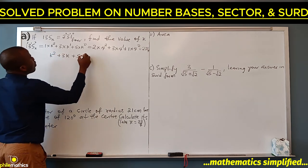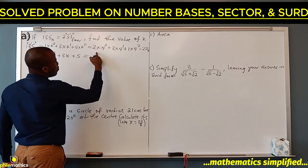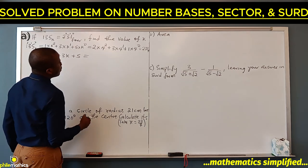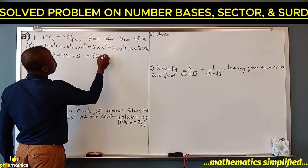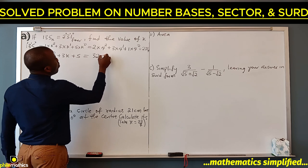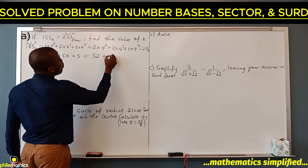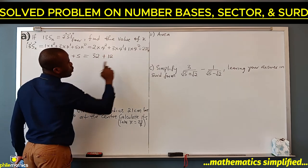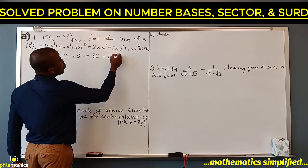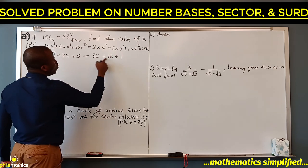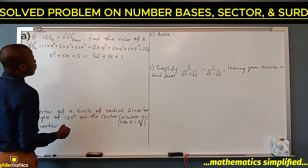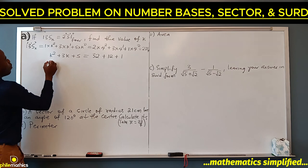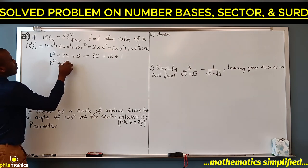Evaluating the right side: 4 squared is 16, and 16 times 2 is 32, plus 3 times 4 which is 12. 4 to the power 0 is 1, times 1 is 1. So 32 plus 12 is 44, plus 1 is 45. We have k squared plus 3k plus 5 equals 45.